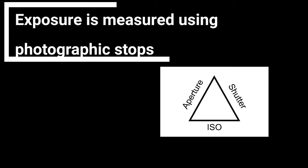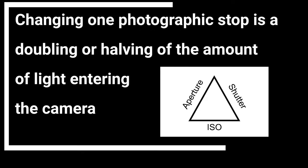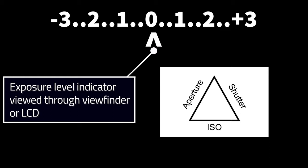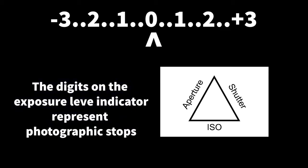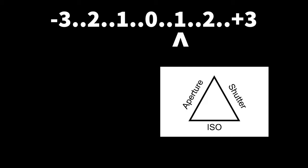Exposure is measured using photographic stops. Photographic stops are really a method of measuring more than a unit of measuring. Changing one photographic stop is a doubling or a halving of the amount of light entering the camera. To assess how much light is getting into the camera, we look at the exposure level indicator viewed through the viewfinder or the LCD. On the exposure level indicator, there's a marquee underneath the zero, which means the exposure is balanced. If you adjust your settings until the marquee moves to plus one on the number line, that's an increase of one photographic stop — you've doubled the amount of light getting into the camera.